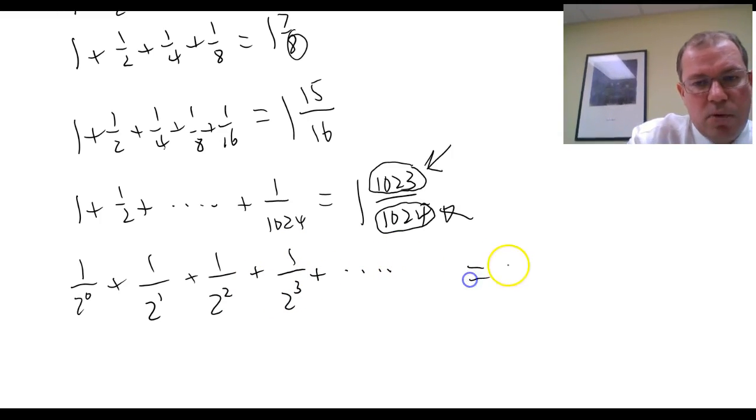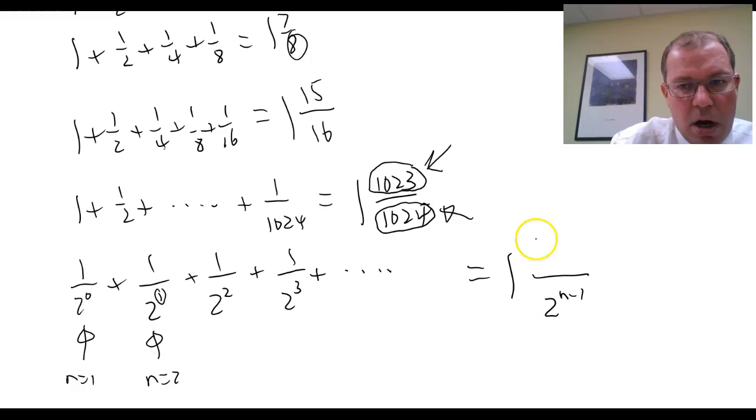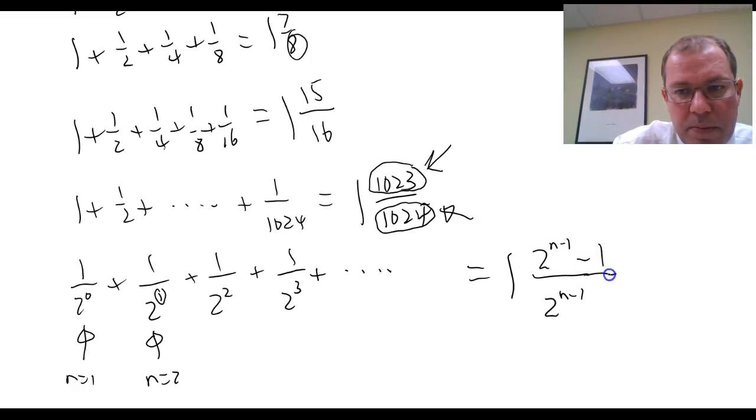if you keep going, the answer will be 1, and you would have 2 to the power n minus 1 in the denominator, because if that is your first term, n equals 1, then that's 0. That's your second term, that's n equals 2, and that's a 1. So it's 2 to the power n minus 1, and on the top it's 2 to the power n minus 1 minus 1. It's just 1 less.